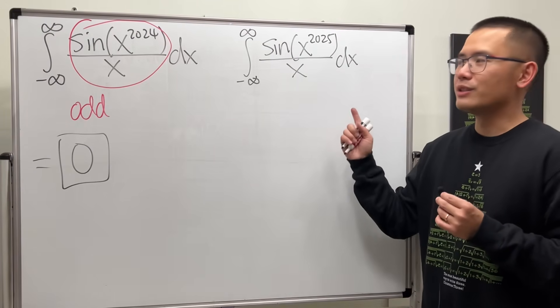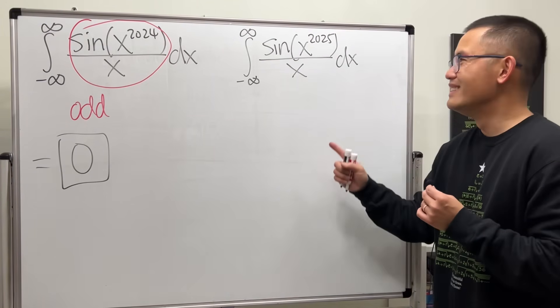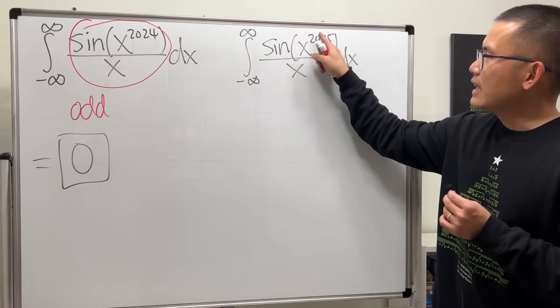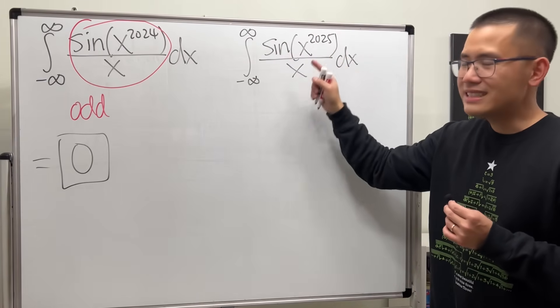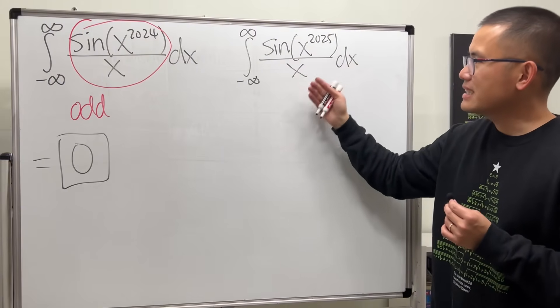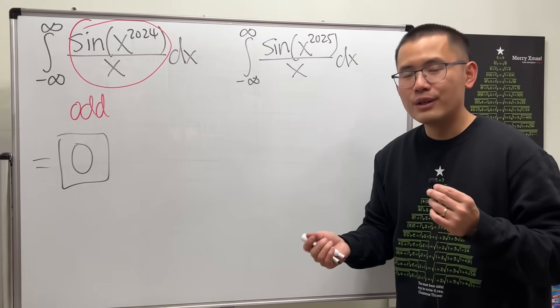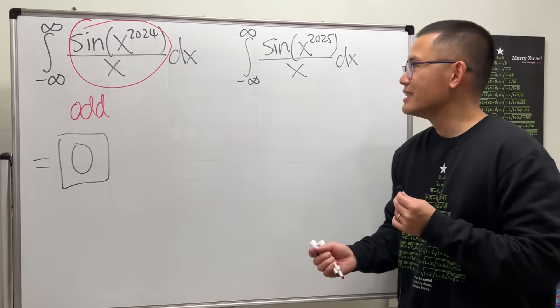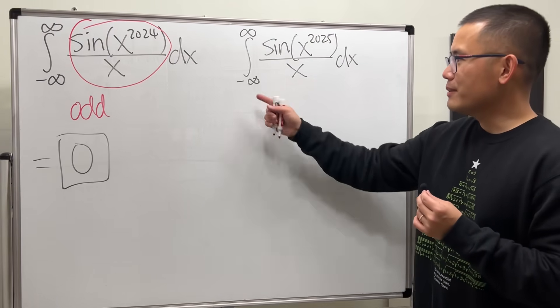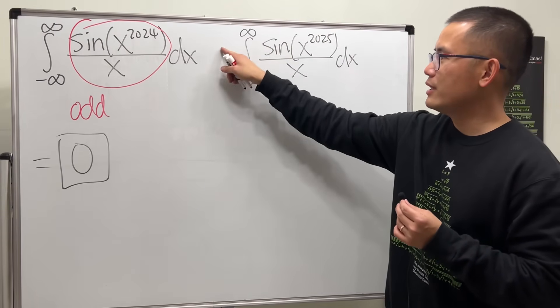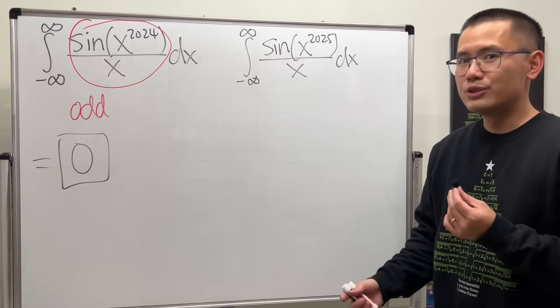But unfortunately, we cannot do the same thing for this one here at all, because this is odd, the top is odd, but the bottom is also odd. Odd divided by odd function is an even function. So how can we do it? Yeah, you can say 0 to infinity and then just multiply the result by 2. Sure thing.